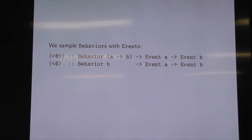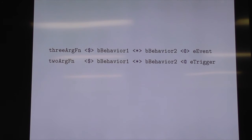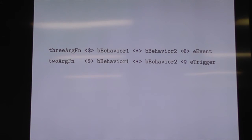We sample behaviours with events. We can use the bottom form if we just want to use the event as the point in time we're interested in, and the top form lets us use the value of the event in there. The syntax looks a little bit funky until you see it in use. This behaviour has applicatives — we can combine multiple behaviours and then throw the value of the event on there. It gives us the point in time at which we want the behaviours to be sampled, then we get the value of behaviour one, the value of the event, combined into a three-argument function.